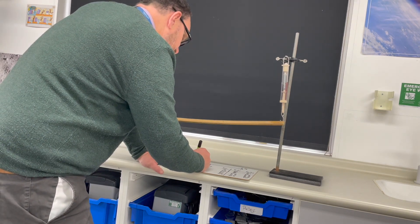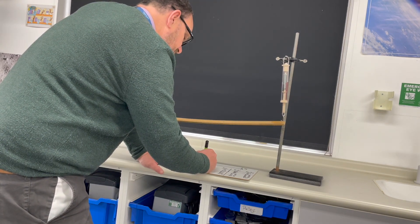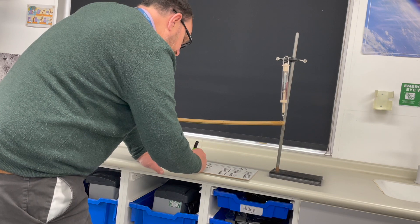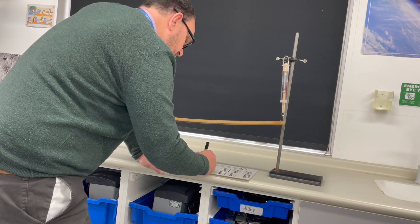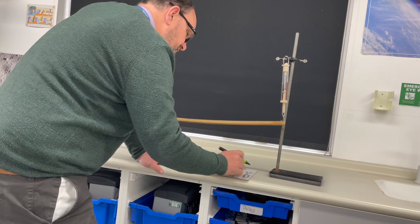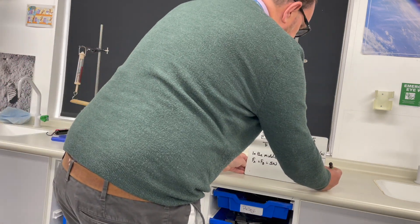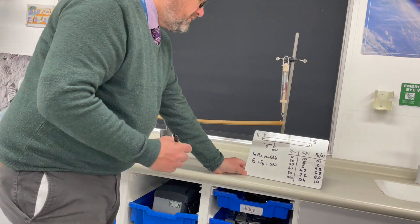So in the middle, FA is equal to FB, which is equal to 5 newtons. Okay, so that is the results.